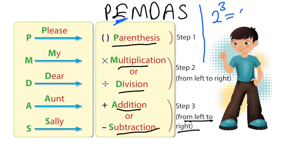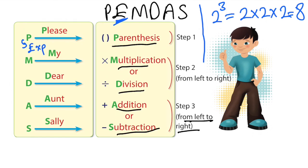For example, two to the power of three means two times two times two. This topic is generally learned after grade five. The three means you multiply two by itself three times, which equals eight. If you have numbers like that, exponent comes after parentheses in the order. Generally in our topics there is no exponent.